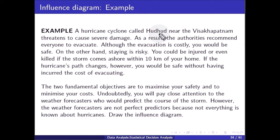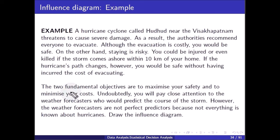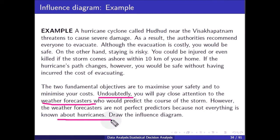Another example: A hurricane cyclone called Hudhud near Visakhapatnam threatens to cause severe damage. Authorities recommend everyone to evacuate, though evacuation is costly. Staying is risky — you could be injured or killed if the storm comes ashore within 10 kilometers of your home. If the hurricane's path changes, you would be safe without incurring evacuation costs. The two fundamental objectives are to maximize safety and minimize cost. Weather forecasts predict the course of the storm, but forecasters are not perfect predictors.